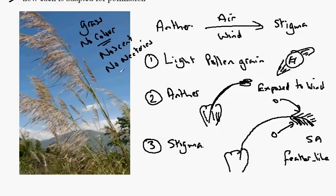This is a waste of energy for a grass which is a wind-pollinated plant. So the adaptations are light pollen grains, exposed anthers, and exposed stigmas.